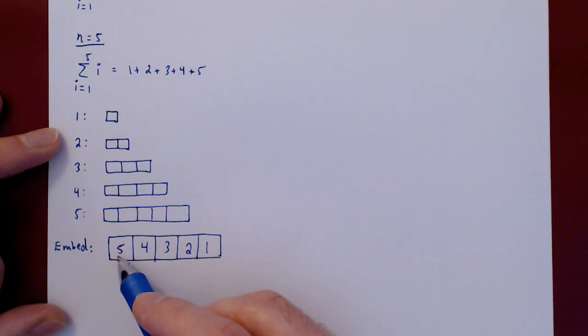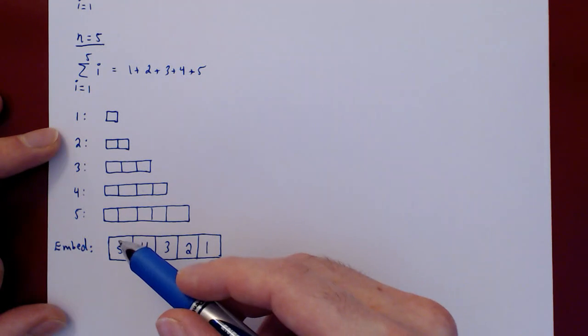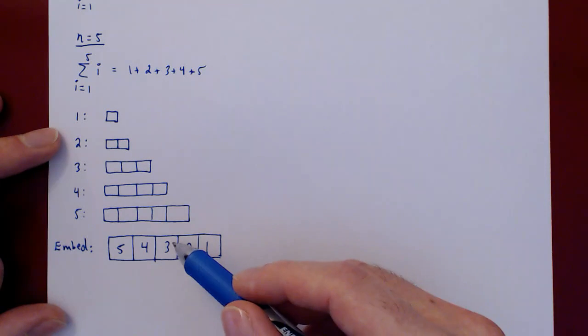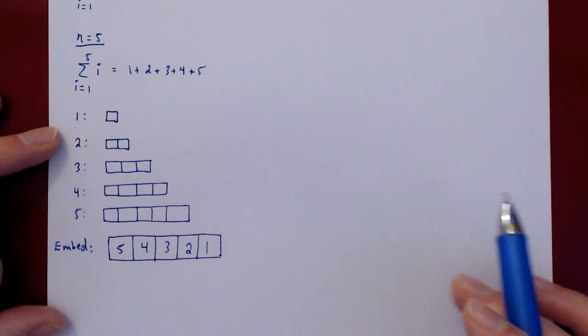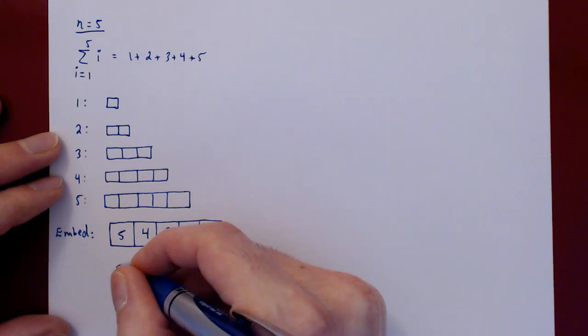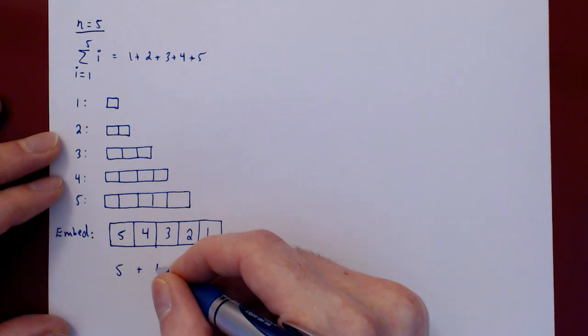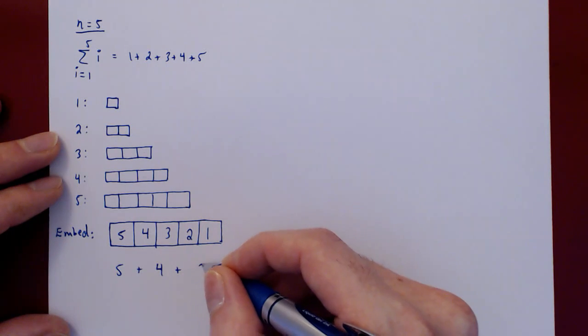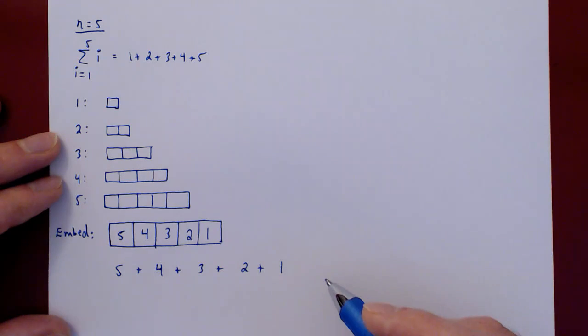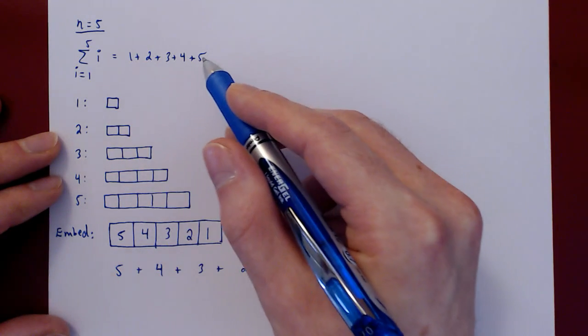Now let's count these from left to right. There are 5 squares into the first one, then 4, then 3, then 2, then 1. So we have 5 plus 4 plus 3 plus 2 plus 1. This gives us the sum in reverse order than it was originally.